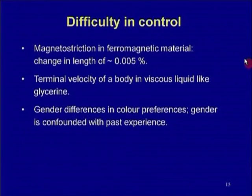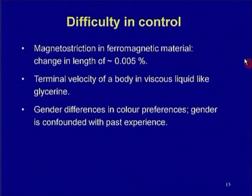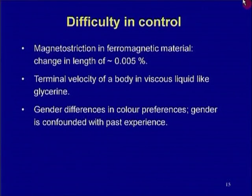Similarly, in the terminal velocity experiment, the terminal velocity can be affected by the diameter of the ball and by temperature — as temperature increases, the liquid becomes less viscous, affecting terminal velocity. If you forget about the temperature increase in the viscous liquid, your conclusions can be inaccurate. In the gender-color-preference study, past exposure to colors is a confounding variable that can affect your conclusion.